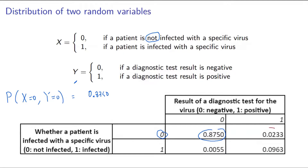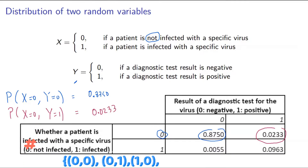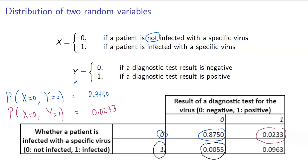This probability 0.0233 is the probability that a patient is not infected — that is, X is zero — but the diagnostic test is positive. That is a misdiagnosis, with Y equal to 1. That probability is 0.0233. The probability that a patient is in fact infected with the virus but the diagnostic test is negative, that is Y equals zero, is 0.0055. That is also a misdiagnosis.